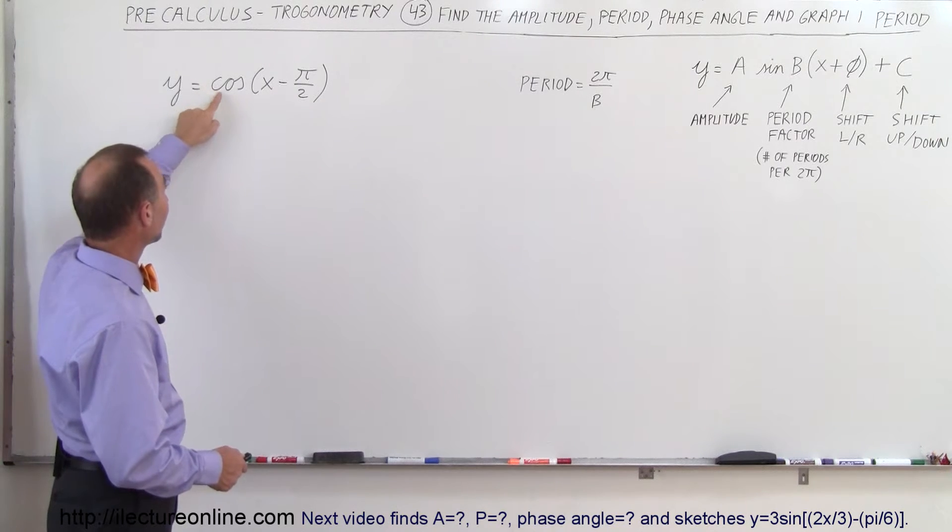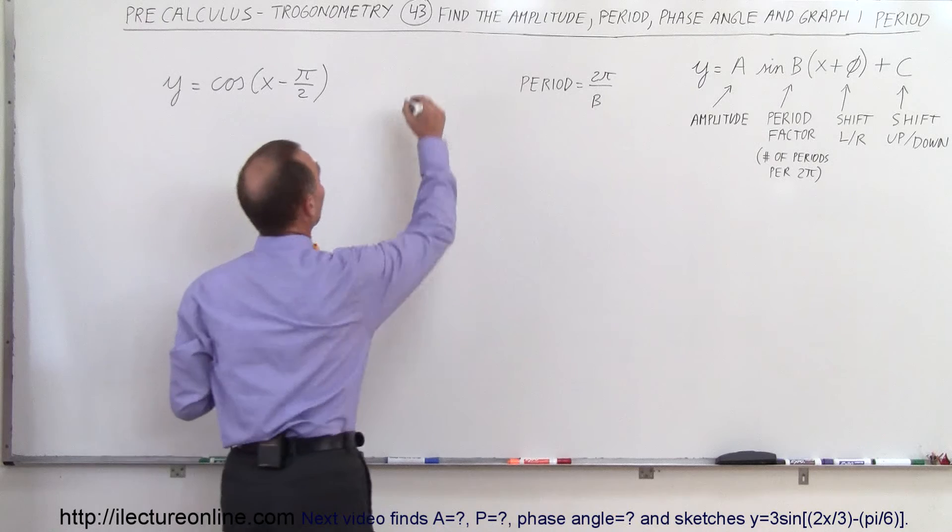let's find the amplitude and the period. The amplitude, since there's just a 1 in front of the cosine, is 1. So amplitude equals 1.